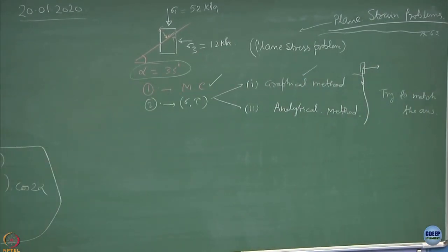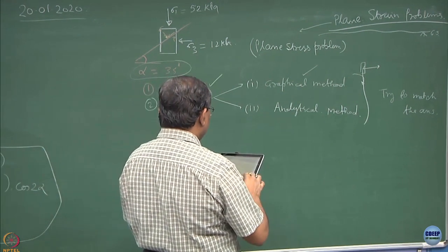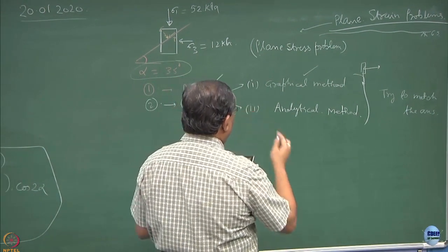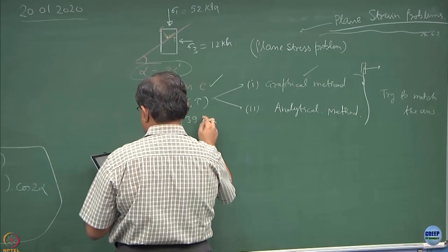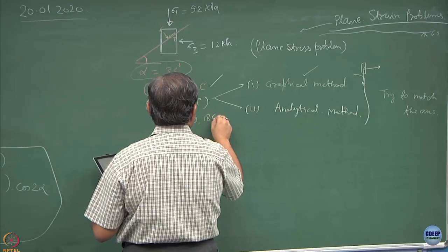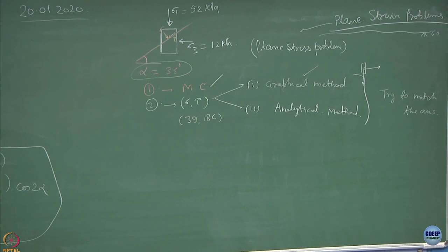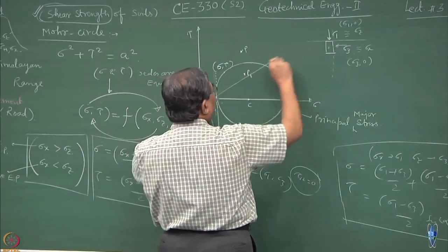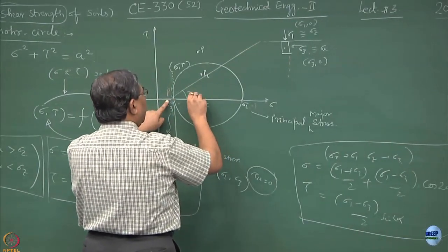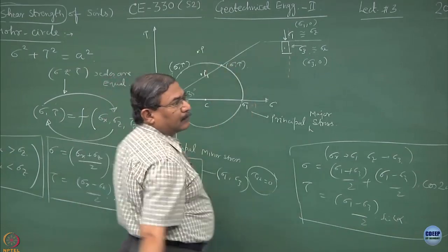What the answer you should be getting is state of stress would be 39 kPa and 18.6 kPa. Where is your guess where the pole is - pole we have already identified. 35 degree line if I draw, this is the place where sigma and tau is acting.